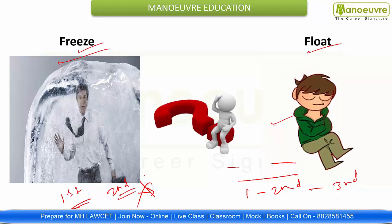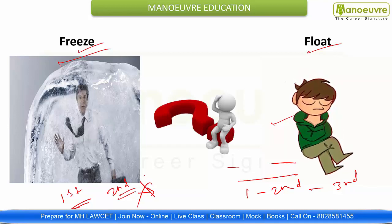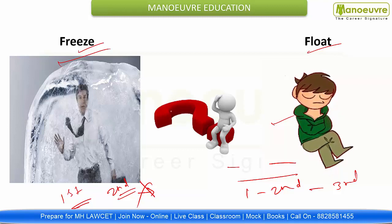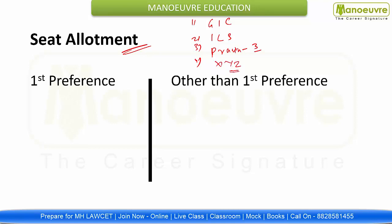The process of freeze and float is a little bit confusing. Let's talk about the seat allotment process in a simple way. You gave preferences — first: GLC, second: ILS, third: Praveen Gandhi, fourth: X, Y, Z college. The process starts — that is the seat allotment process. According to your marks in CET and according to each particular college's cutoff, you will get admission. If you got GLC as your first preference, that becomes auto-freeze — because you got your first preference GLC, you cannot participate in the second round.